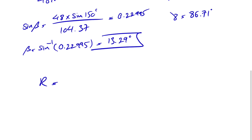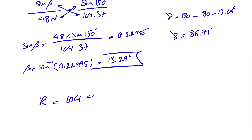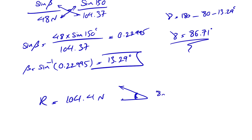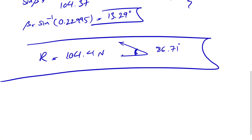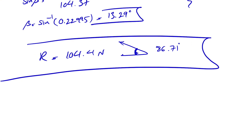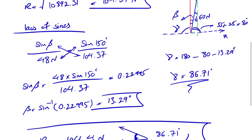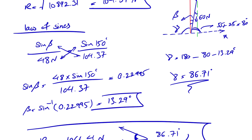So our final answer: the magnitude of R is 104.37 newtons, and the direction angle gamma is 86.71 degrees. We go with this angle rather than the one greater than 90 degrees on the right side. That's the final answer including the magnitude and direction of R. Hope everything was clear — let me know if you have any questions, and take care. See you in the next one.